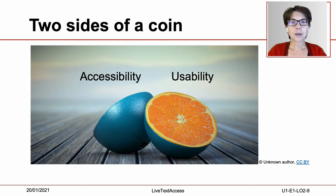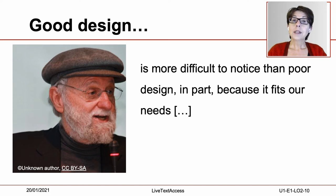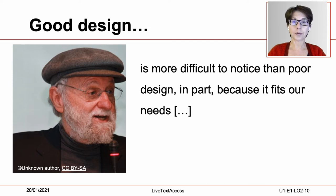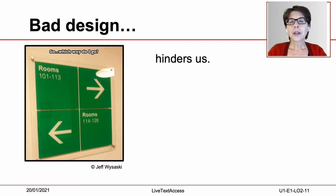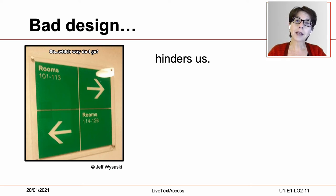Let's take a closer look at these concepts. Well-designed things are more difficult to notice than things that are poorly designed. This is a statement by Don Norman, a university professor at the University of California. According to Don Norman, we often do not notice good design because things are well designed and they fit our needs. Thus, we can say that the use of well-designed products becomes easier — it is effective because we can reach our goals without trouble and even find it enjoyable. Conversely, bad design hinders us, makes things difficult or even impossible, and even upsets us.